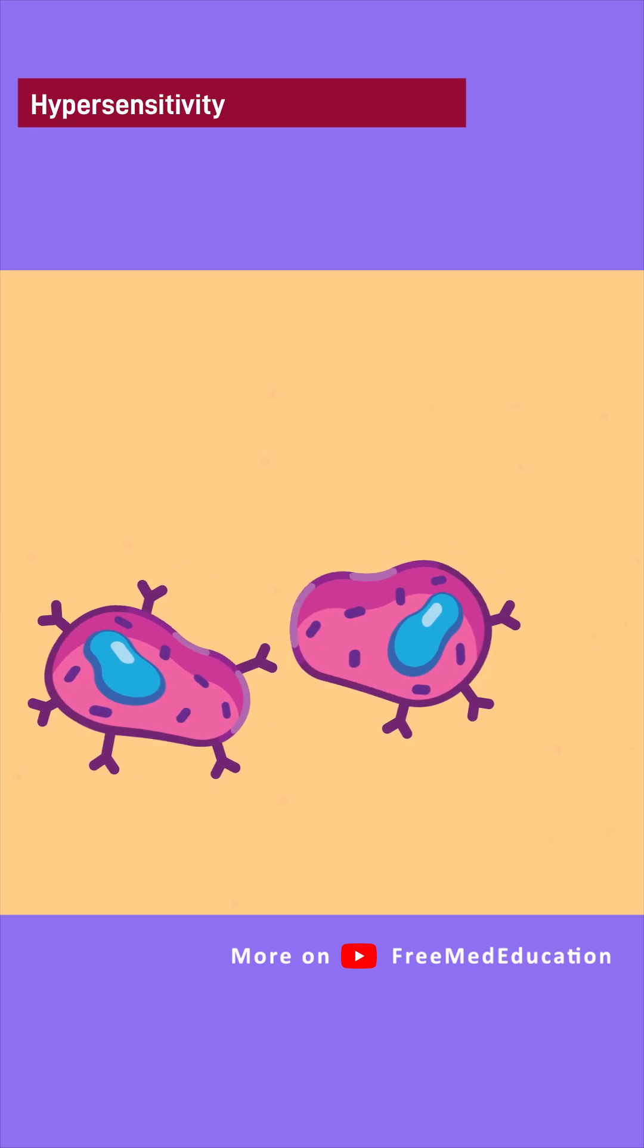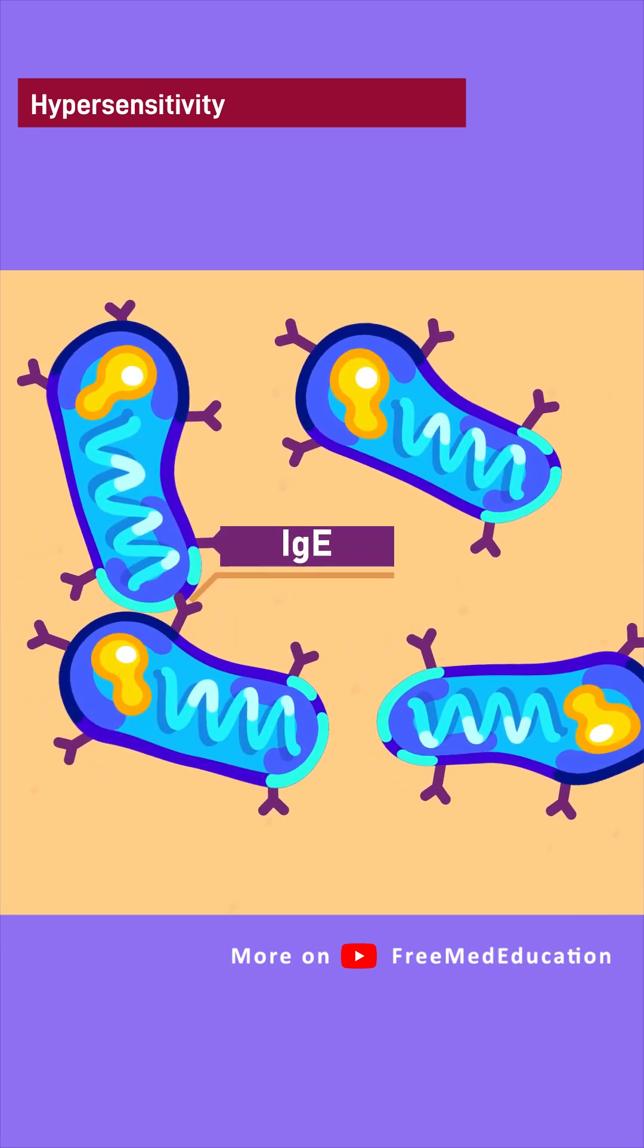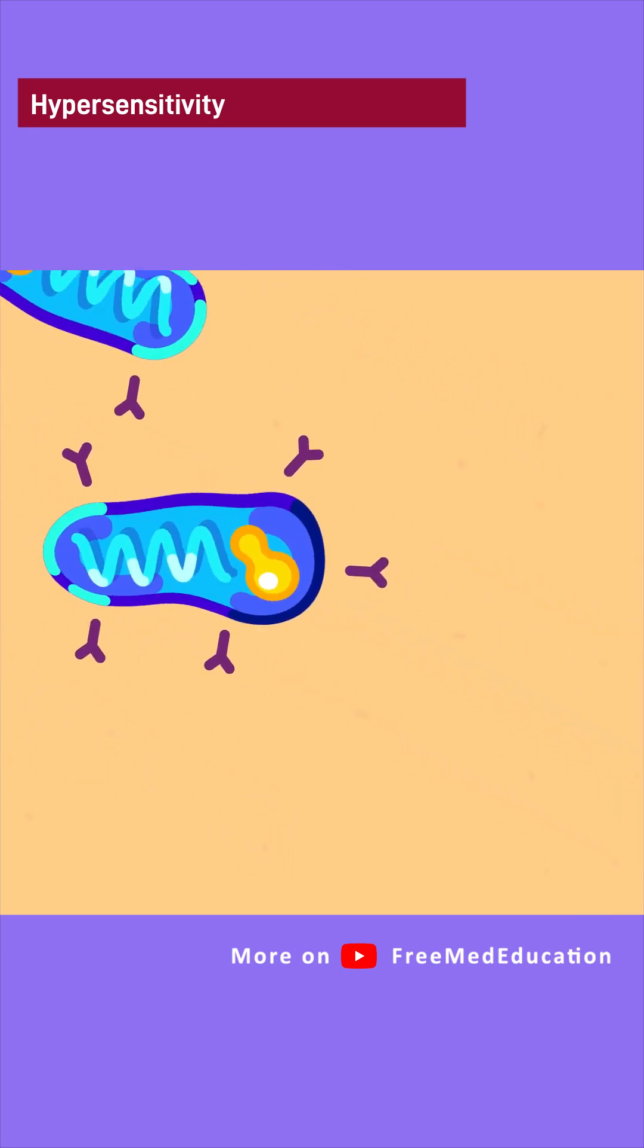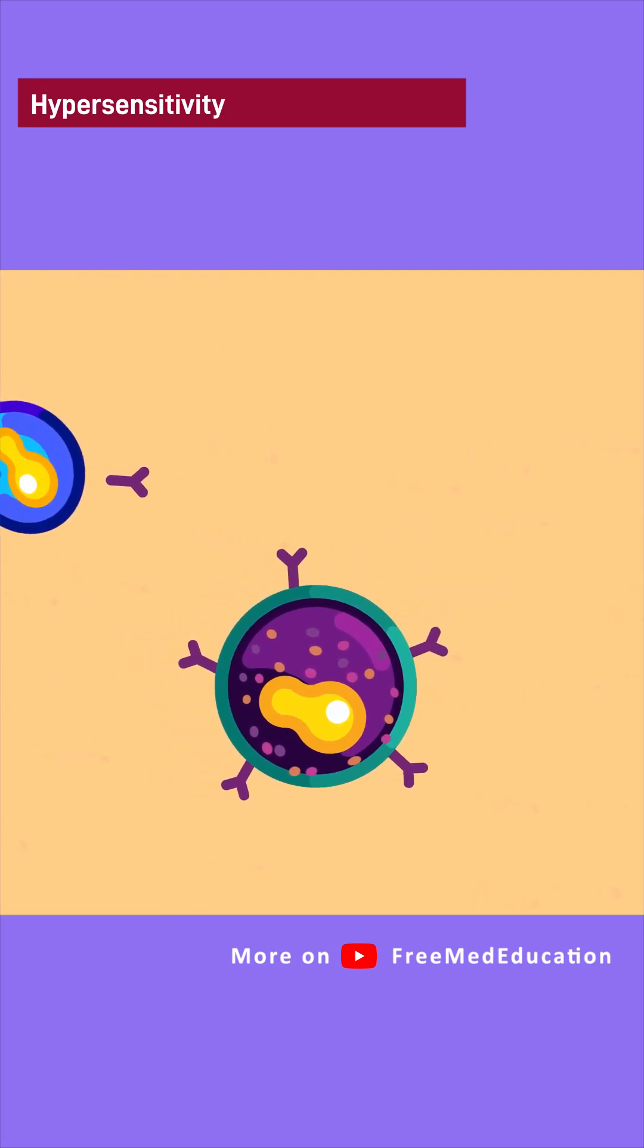The B cells undergo class switching to produce immunoglobulin E. The IgE will attach to the Fc receptor on the mast cells and basophils.